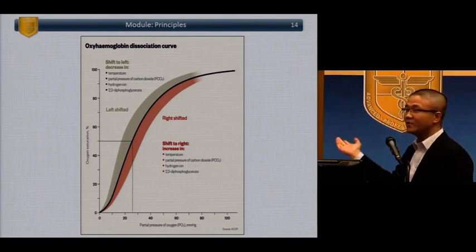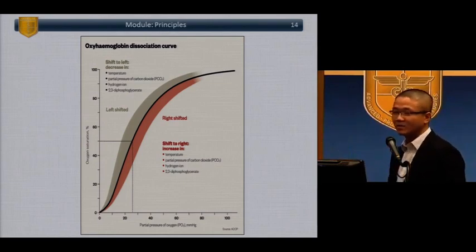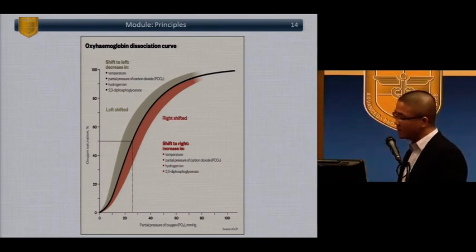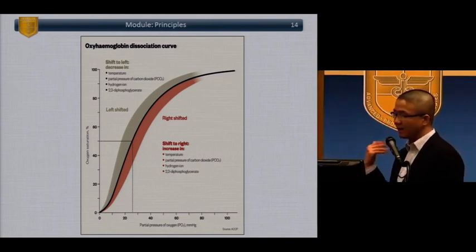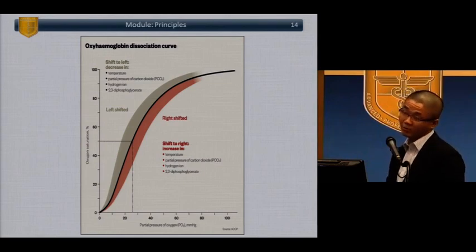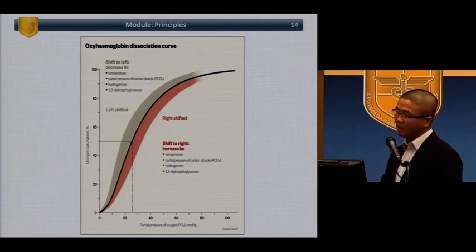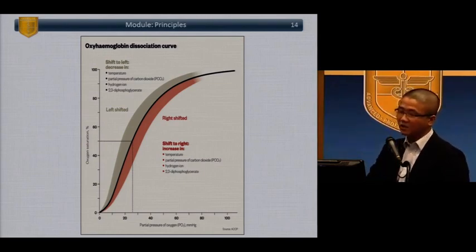Just a reminder about the oxygen-hemoglobin dissociation curve — right shifting and left shifting. Our bodies were designed to shift right in a metabolic acidemic picture where one is hypoperfused, because we're designed to unload oxygen in that state when we need it most.